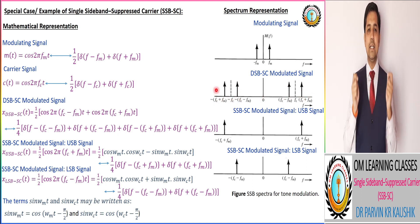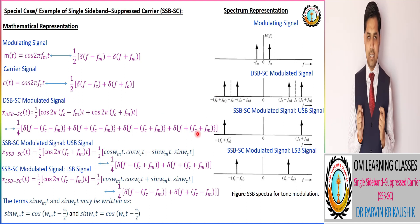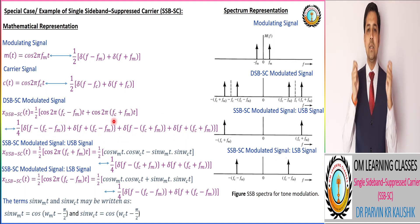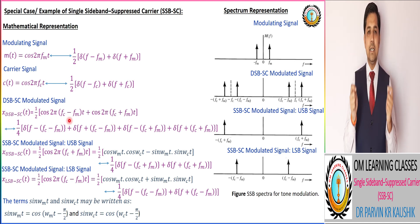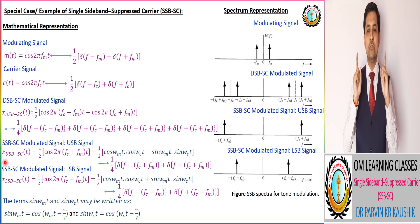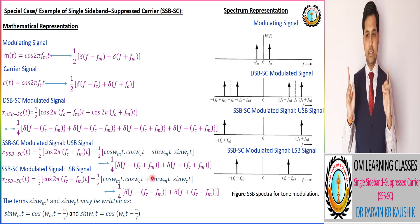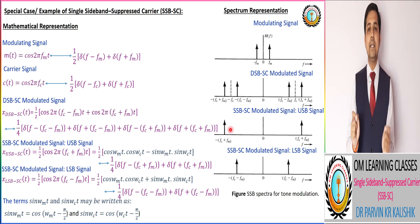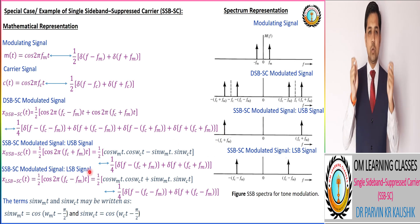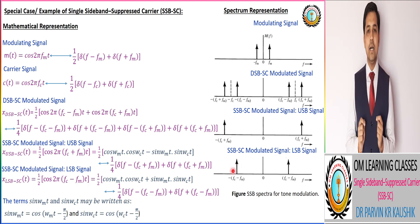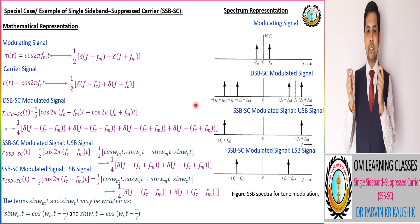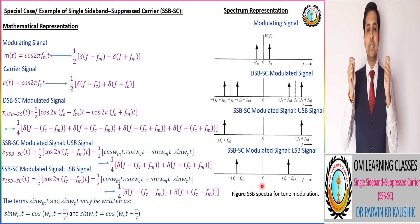As per the introduction of SSB-SC modulation technique, by utilizing a band pass filter, we get the upper sideband SSB-SC signal that contains only one sideband corresponding to the upper sideband. Similarly, we get the lower sideband, which is known as the LSB-SSB-SC modulated signal. Their corresponding mathematical representation as well as their spectrum representation is shown in the figure.